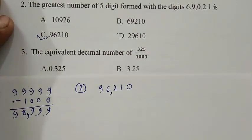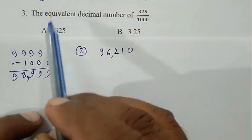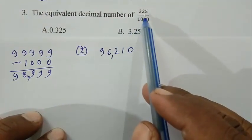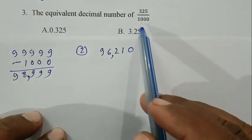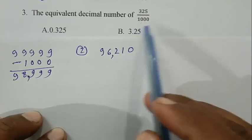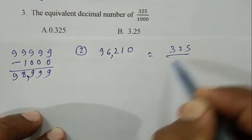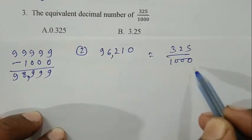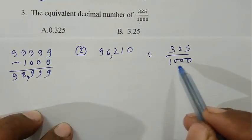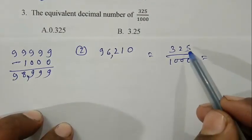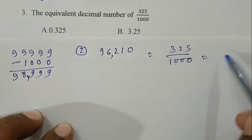Question number 3: The equivalent decimal number of 325 by 1000. That is 325 divided by 1000. We have to put the decimal point after 3 places. So 0.325.